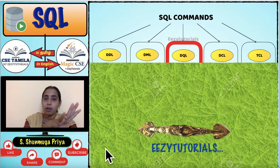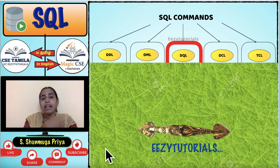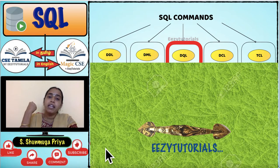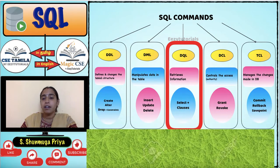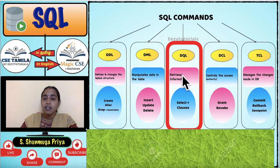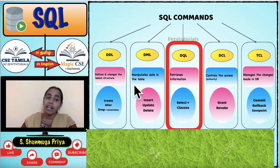So, to retrieve already stored data, what is the name of the command? To retrieve information, use the DQL command — the SELECT command.